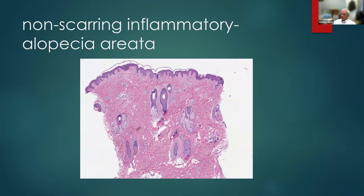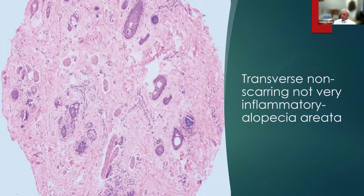Here's a case of alopecia areata where we don't see any inflammation, but we do see a number of catagen hairs. Sometimes we get biopsies where we see the regressing hair but don't see the inflammation — but it doesn't mean it's not alopecia areata. Here's a cross section of alopecia areata in the late stage: there's really not very much inflammation, but they're all telogen hairs. You could argue — as I have argued often — that if alopecia areata goes on too long, it becomes scarring. But that's a debate for another time.